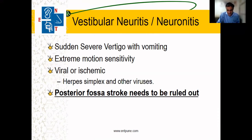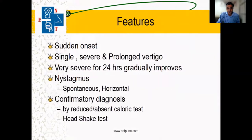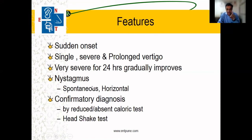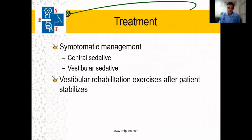An MRI is advised in this condition. The vertigo is sudden onset, severe, and prolonged for more than 6, 7, 8, or 24 hours. The patient has spontaneous horizontal nystagmus and the history is almost confirmatory. If the patient comes at a later stage, a head shake test or absent caloric response test can diagnose this condition.